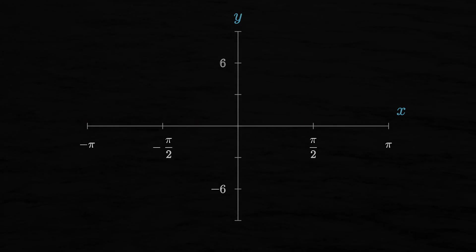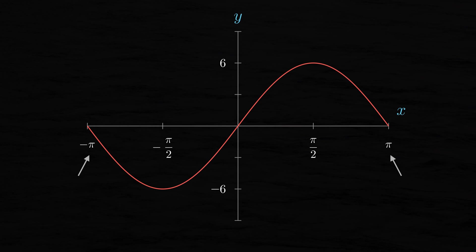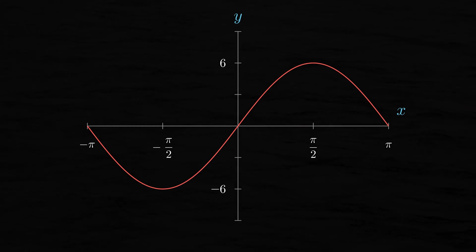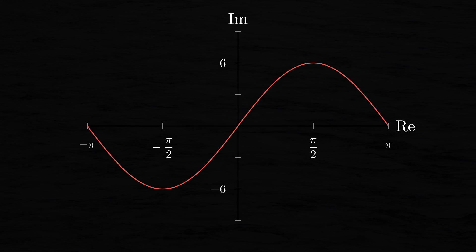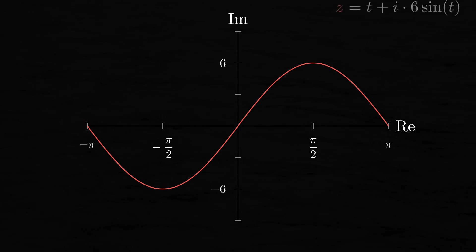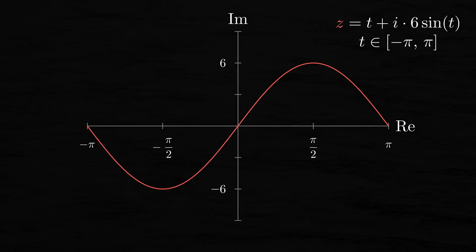So, let's consider one period of some sine function, say y equals 6 times the sine of x, where x varies from negative pi to pi. Actually, let's say that the x-axis here is the real axis, and that the y-axis is the imaginary axis. Now we're looking at this period of our sine functions graph projected onto the complex plane. Specifically, this curve consists of the complex numbers z equals t plus i times 6 times the sine of t, where t is a real parameter that varies from negative pi to pi.